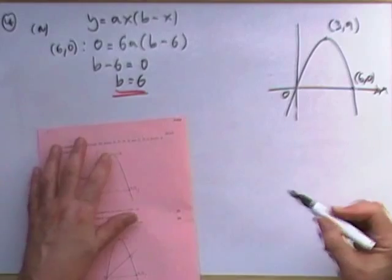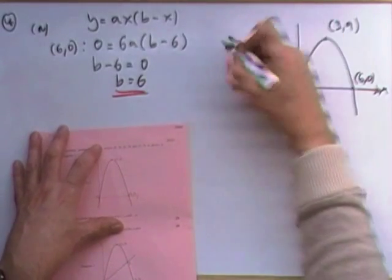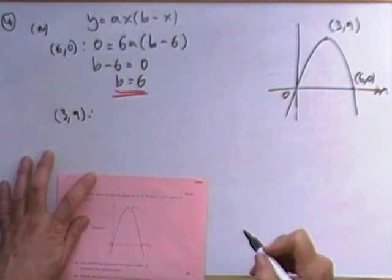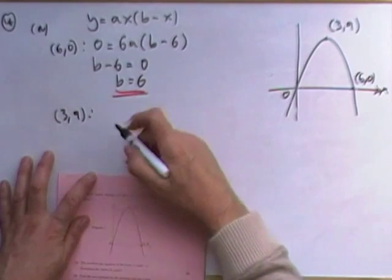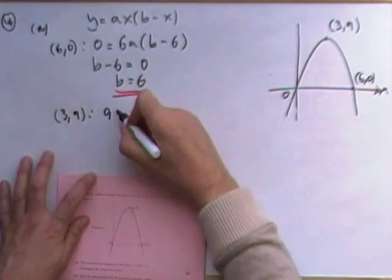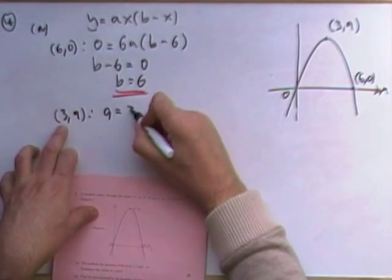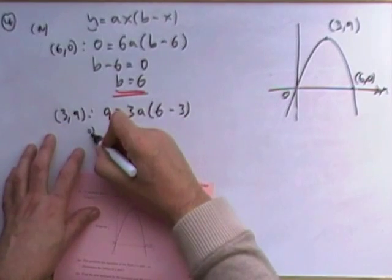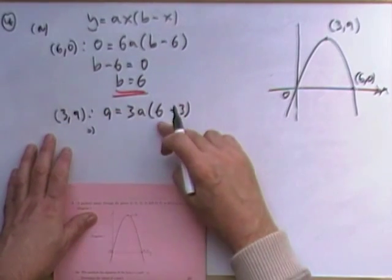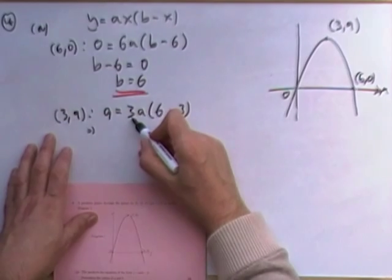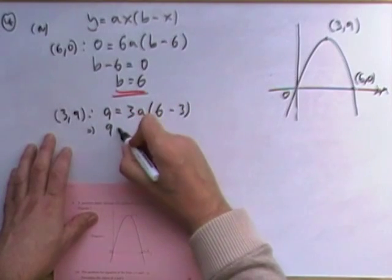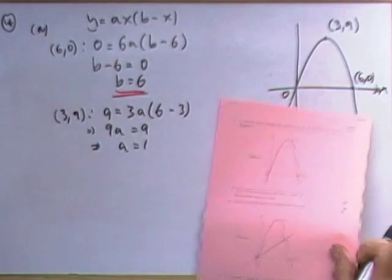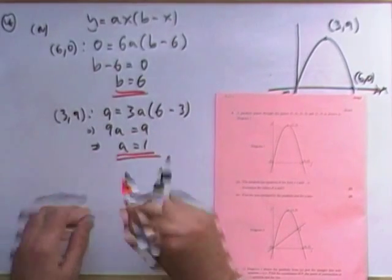And then the other point, I'll put it here. Put three, nine into the equation. Now that I know that b is six, so I've got three equals three a times, I know that's now six minus three. So there's only the a left. So that says I've got three times three. I've got nine a equals nine. So a must equal one. So that's the first part. Quite easy.